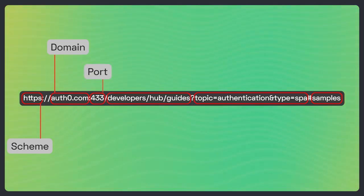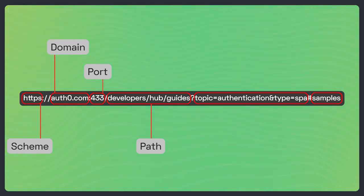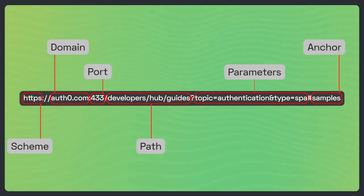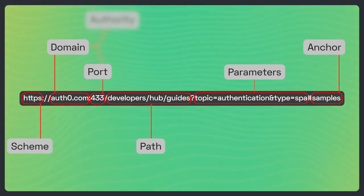The port is the protocol port to which to send requests to access that resource. Usually it is omitted, meaning that the default protocol port should be used. We have the path, which is the path of the resource on the hosting server, and we have parameters — these are optional additional information provided to the hosting server. And finally, we have the anchor, which represents a specific part inside the resource. It is also called a fragment. It is worth mentioning that the group consisting of the domain name and the port, if present, is also known as the authority.